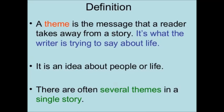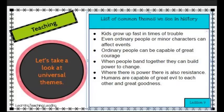We also talked about universal themes. The next slide gives us a few examples. One of them could be: kids grow up fast in times of trouble — that might be you right now. Even ordinary people or minor characters can affect events. Ordinary people can be capable of great courage. When people band together, they can build power to change. Where there is power, there is also resistance — that's a good Star Wars one. And humans are capable of great evil to each other and great goodness. Those are themes we can see throughout history and in a lot of the things that we watch and read.